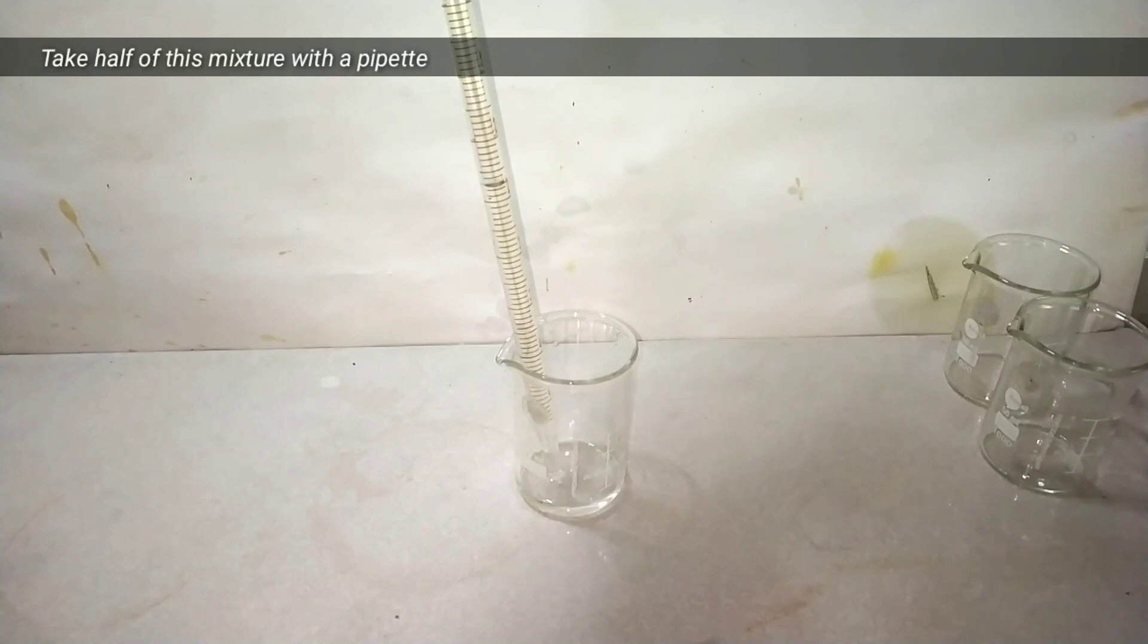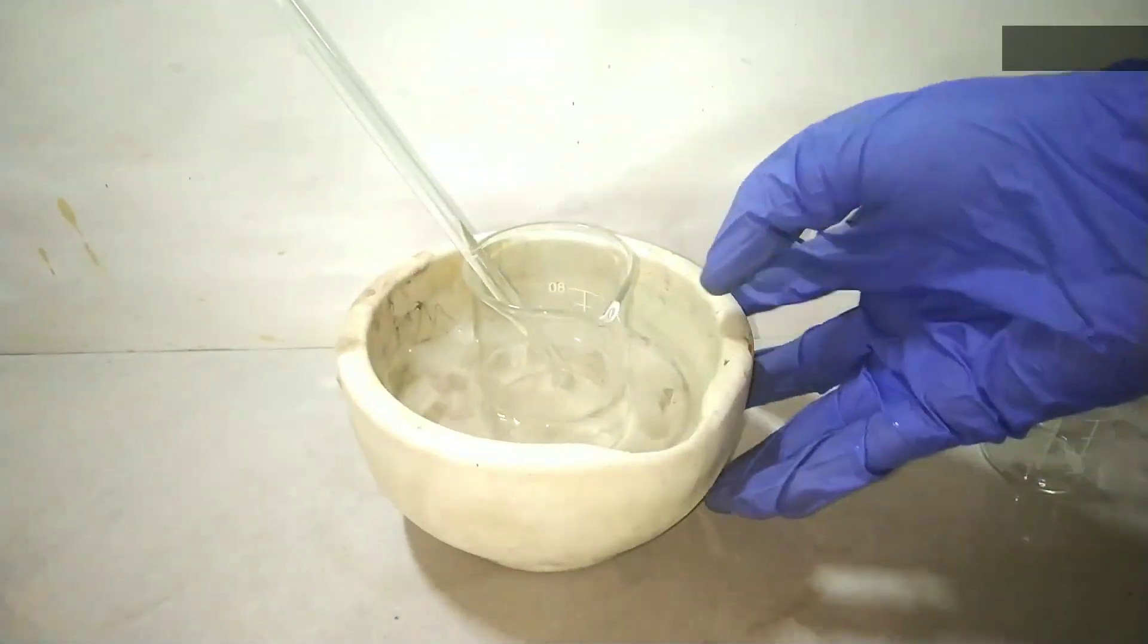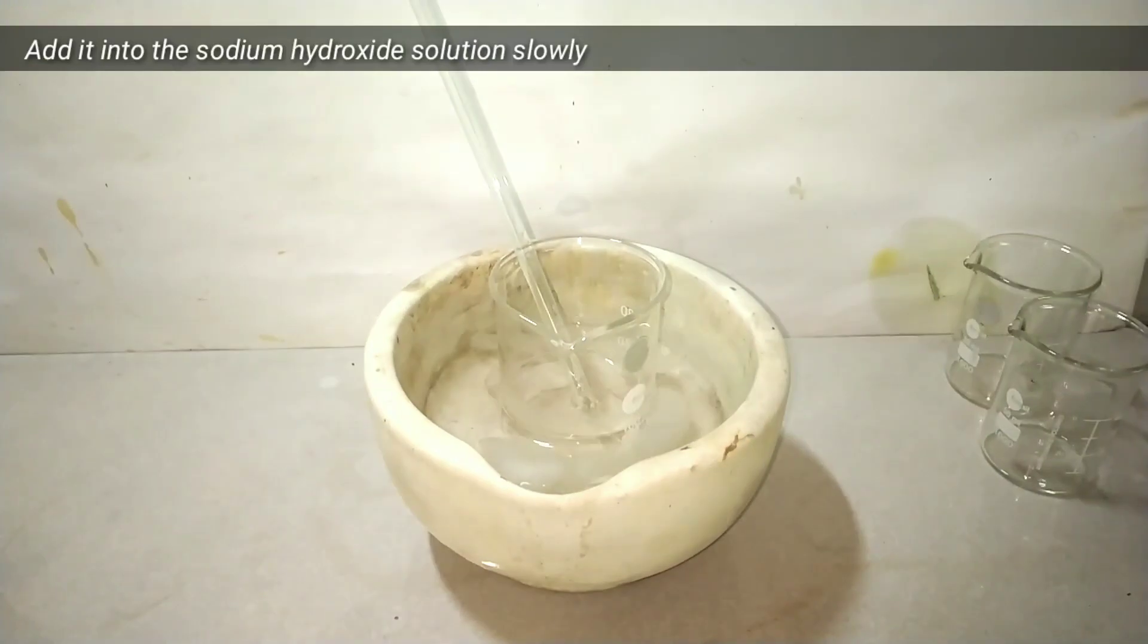With the help of a pipette, half of the volume of the mixture of benzaldehyde and acetone was taken and was added into the sodium hydroxide solution kept in the ice water bath.